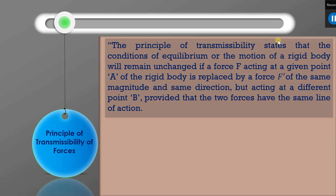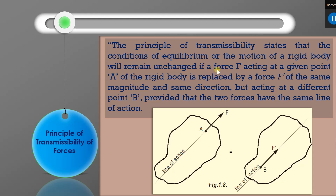The principle of transmissibility is formally defined as: the condition of equilibrium or motion of a rigid body will remain unchanged if a force F acting at a given point A on the rigid body is replaced by a force F' of the same magnitude and same direction acting at a different point B, provided that the two forces have the same line of action. Let us consider a body on which force F acts with a certain magnitude and direction.